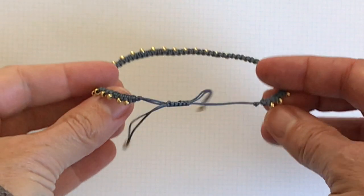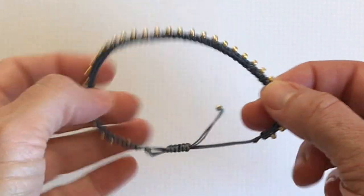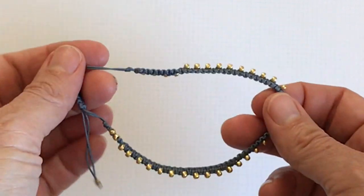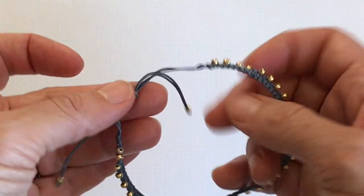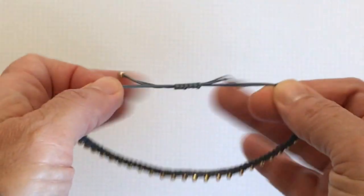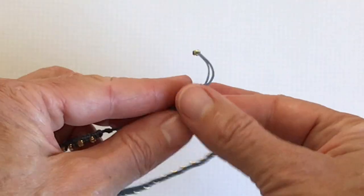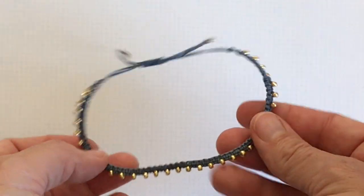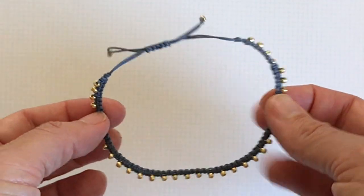I want to show you how to make this anklet out of Chinese knotting cord and seed beads. It's got a sliding clasp, as you can see, and you can get the full tutorial on my blog at otherwiseamazing.com.